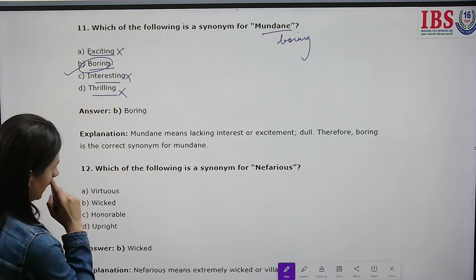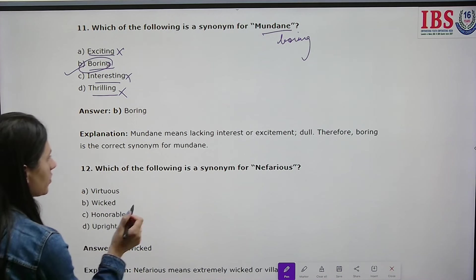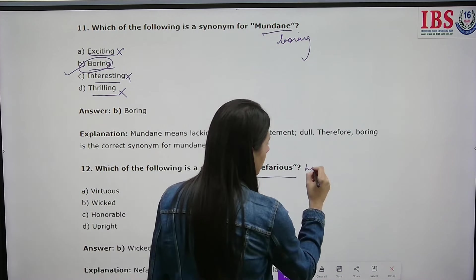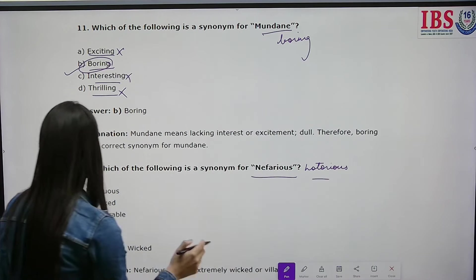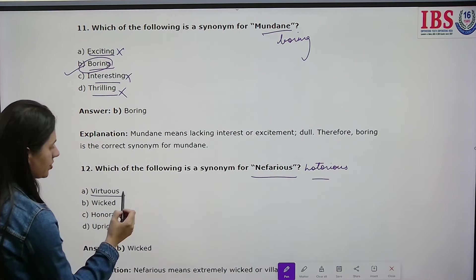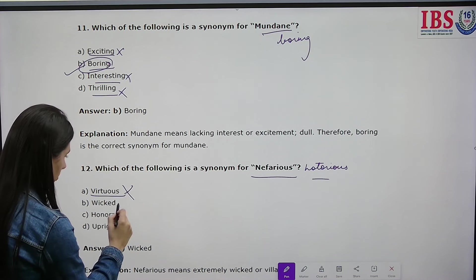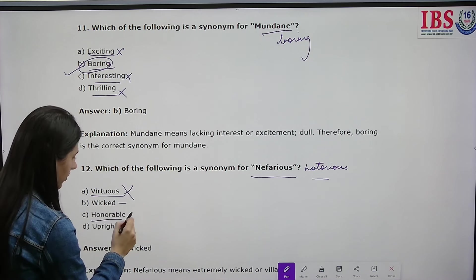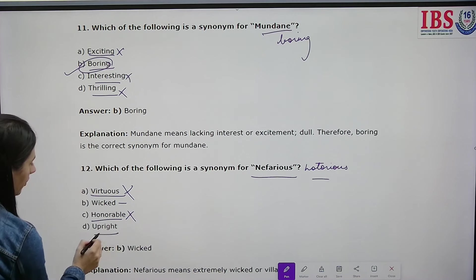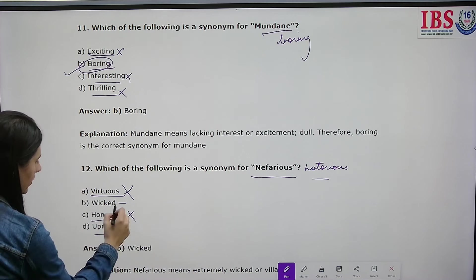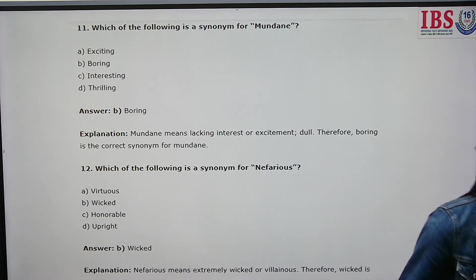Which of the following is a synonym for 'nefarious'? Nefarious means notorious or wicked. The options are virtuous, wicked, honorable, and right. Virtuous means full of good qualities. Honorable is also positive — notorious things are never honorable. Right is also incorrect. Wicked and villainous describe nefarious behavior, so wicked is the correct answer.